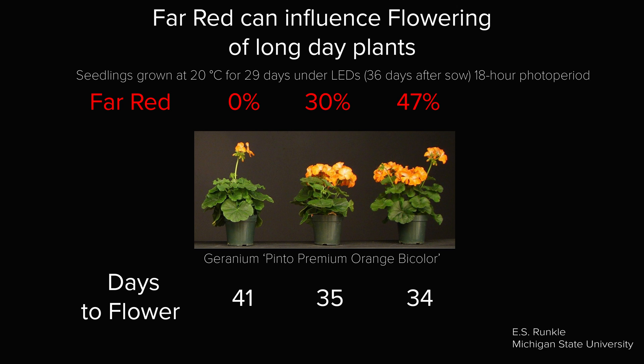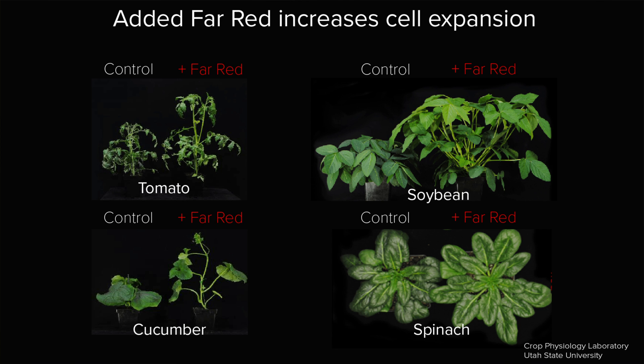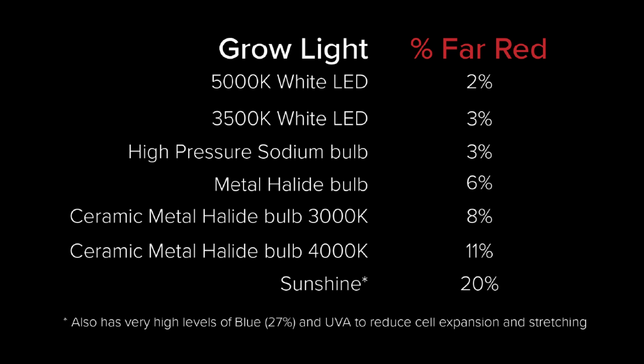There are two other small comments about far red. First, people have heard that it can cause plants to flower — that can be true in long-day plants where growers sometimes use far red to stimulate flowering. However, cannabis is a short-day plant, so it's not relevant to cannabis growers. The other point is that far red can cause leaf expansion — more leaves and larger leaves compared to using lower levels of far red. That may be useful in early stages of growth to build up the canopy, but I've never seen evidence to demonstrate that clearly, and the benefits are likely small or marginal.